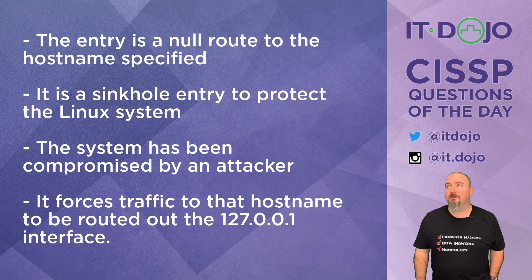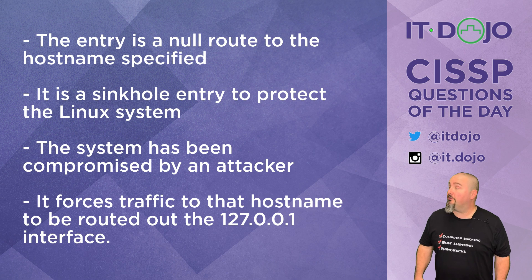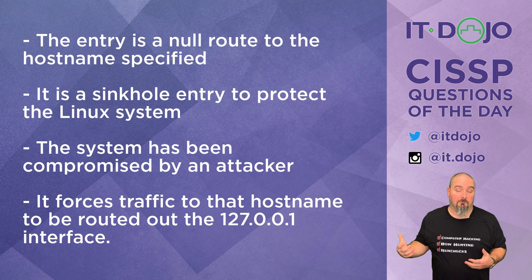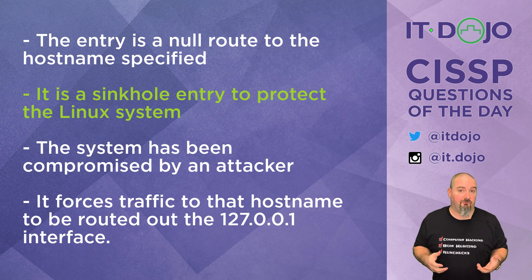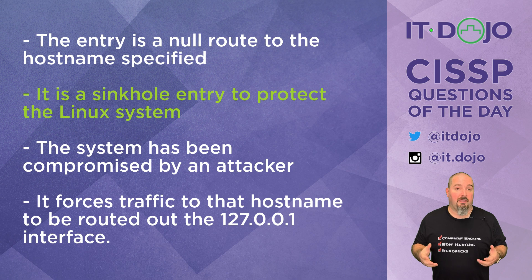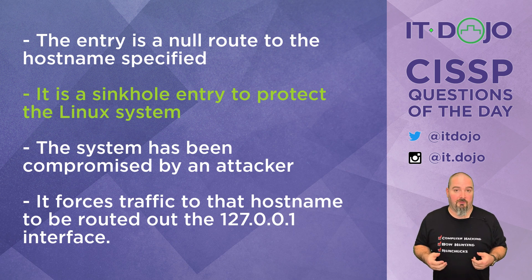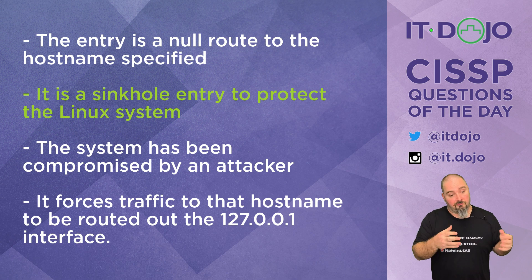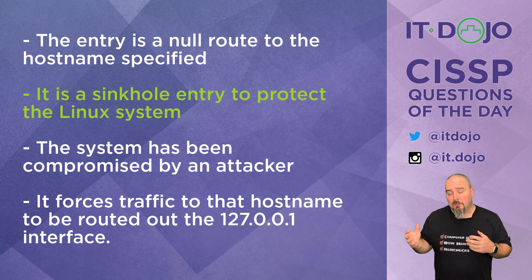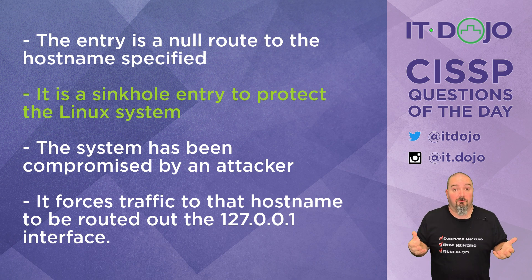Choice two says it is a sinkhole entry to help protect the Linux system. This is actually the right answer. What you've got here is a situation where there's a bad hostname — evilapp.evilsite.com — and you don't want a user to be tricked into going there. If they click a link or run software that tries to retrieve something from that location, the default behavior is for the computer to reach out to its resolver — DNS — and get resolution for that hostname, which would resolve to the correct IP address.